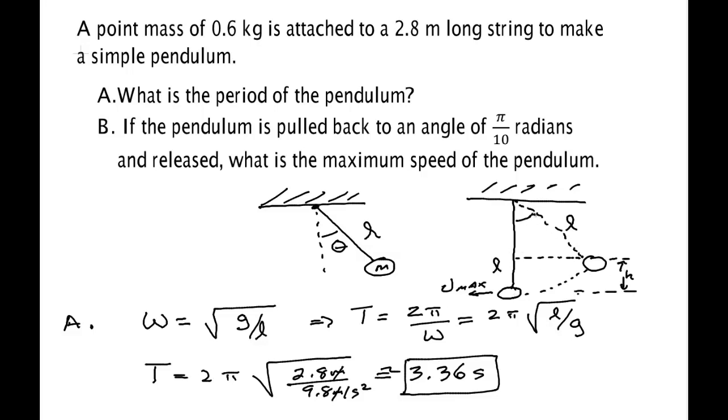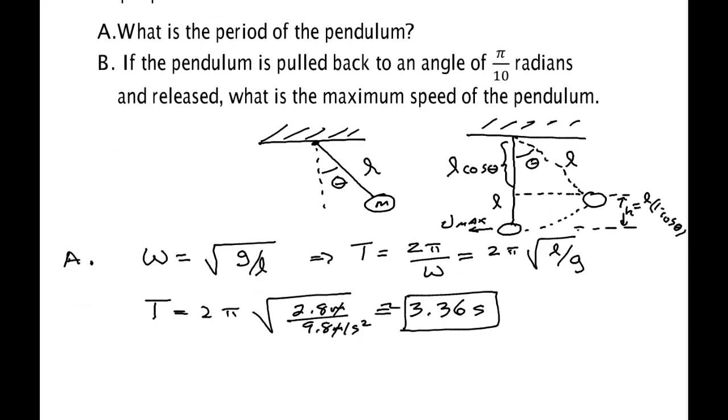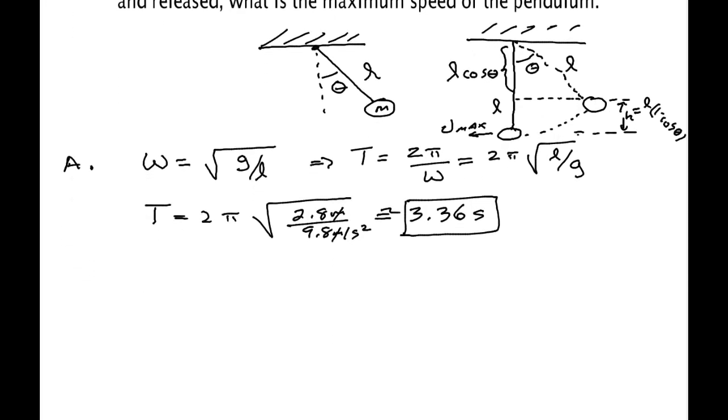Now we know this angle here is theta. So this distance here is L cosine theta. So this height is the distance L minus L cosine theta. So it's L times one minus cosine theta. Let me move down a little further and write that up.